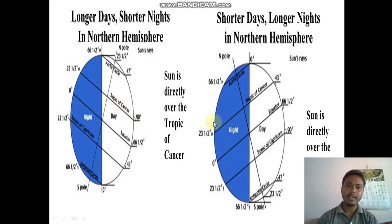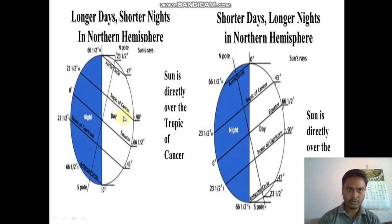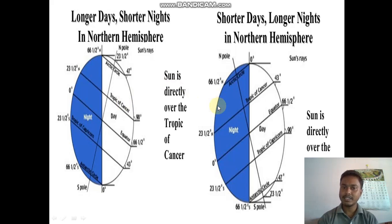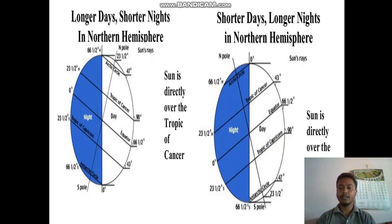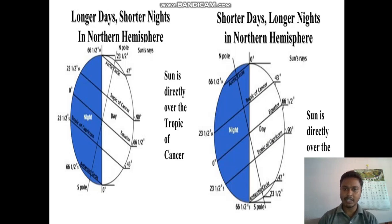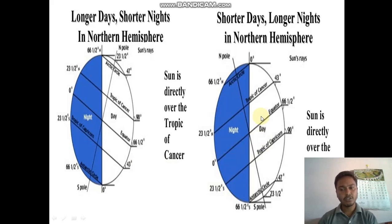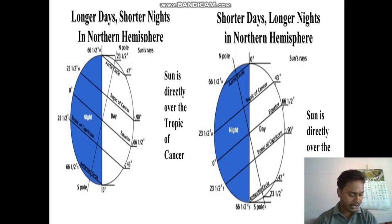When the sun rises directly over the Tropic of Cancer, we have longer days and shorter nights in the northern hemisphere. When the sun is directly over the Tropic of Capricorn, we have shorter days and longer nights. For example, in India we are in the northern hemisphere, and now as winter is approaching, the sun is directly over the Tropic of Capricorn, so we are having shorter days and longer nights. Slowly and slowly we will have more longer nights and shorter days.